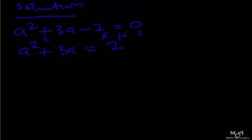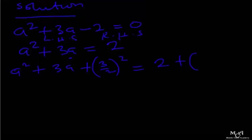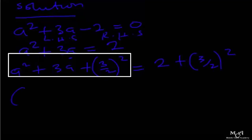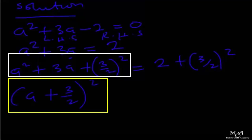After doing that, pick the variable. The coefficient of a here is 3. So pick the variable: 3 divided by 2 is three over two. Square it and add it to both sides. So you have a squared plus 3a plus (three over two) squared on the left, and 2 plus (three over two) squared on the right. This expression on the left is the same as a plus three over two, all squared.